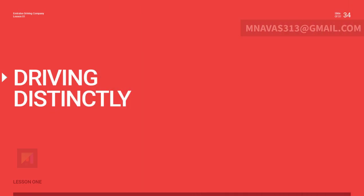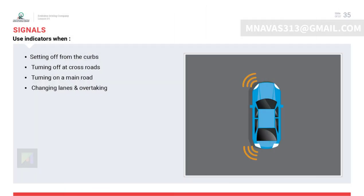Driving distinctly means using all communication sources — indicators, horn, hazard lights, etc. — at the right time and the right place, and cancelling them at the right time and place as well. Indicator lights are an important source of communication; they are used to show our intentions to others. The indicator should be used at the right time and place, and cancelling indicators after use is equally important. Indicator lights do not give orders.